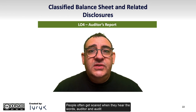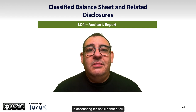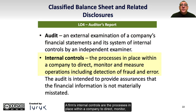People often get scared when they hear the words auditor and audit and think a company is being audited because it's done something wrong. In accounting, it's not like that at all. An audit is an external examination of the company's financial statements and its system of internal controls by an independent examiner. A firm's internal controls are the processes in place within a company to direct, monitor, and measure operations, including detection of fraud and error.